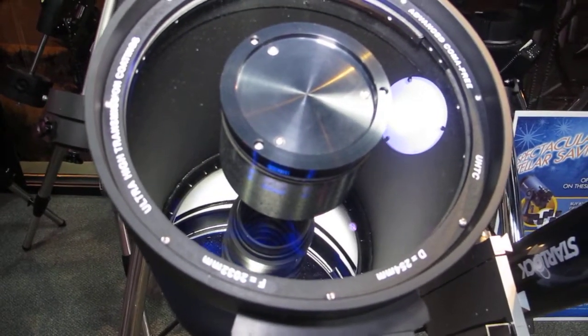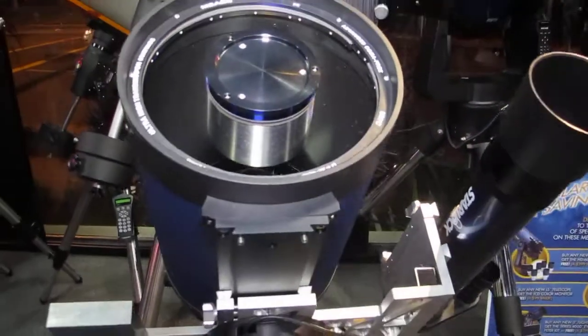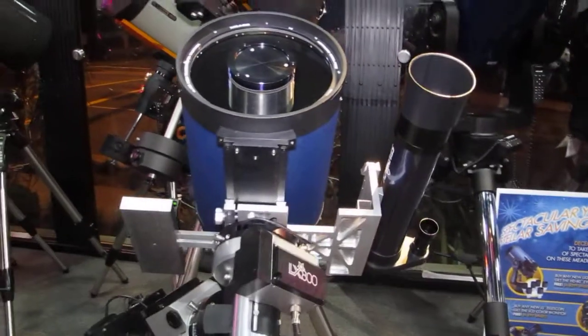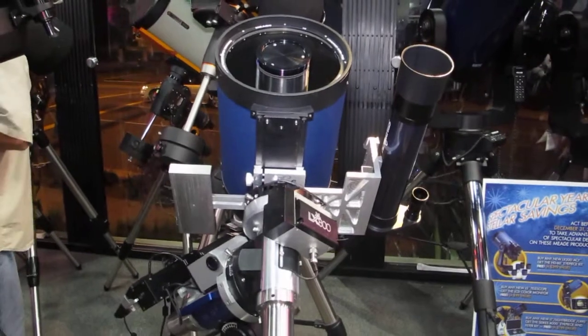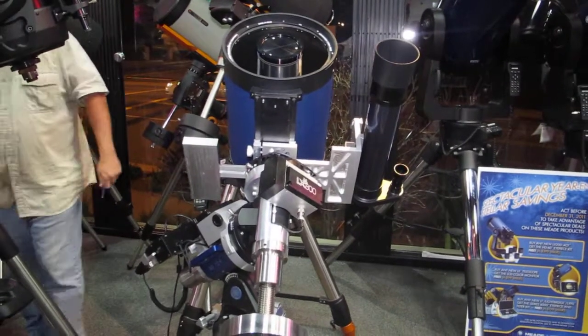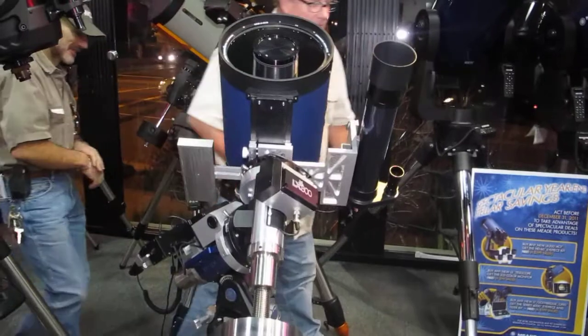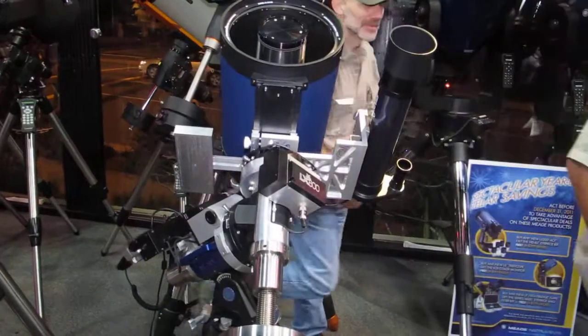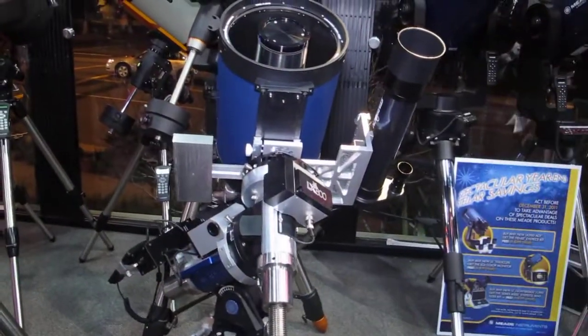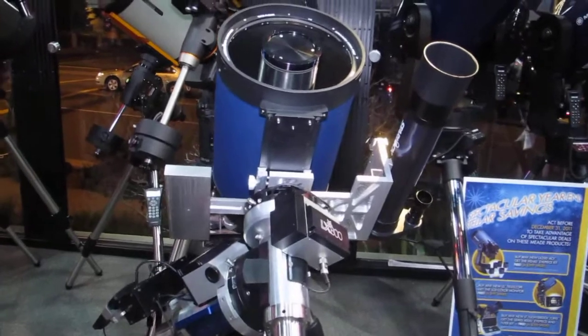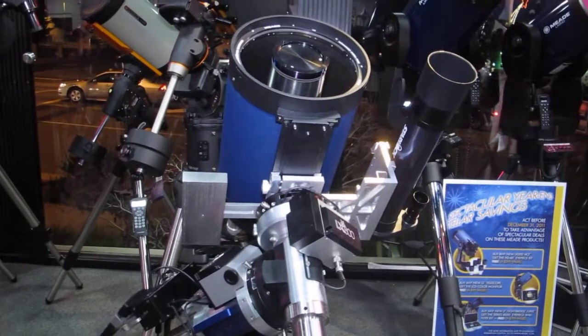We've integrated a new focusing system for this Schmidt-Cassegrain-style telescope, and that actually gives the user no image shift and no need for a mirror lock, so the ideal astro-imaging optical system as well. That's being made in a 10 inch, a 12 inch, and a 14 inch.